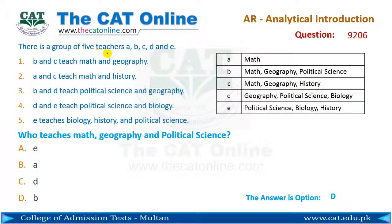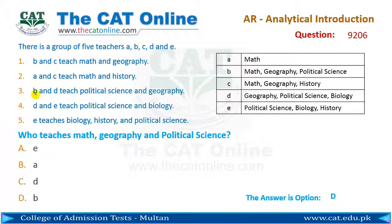There is a group of five teachers A, B, C, D, and E. Condition one: B and C teach Math and Geography. Condition two: A and C teach Math and History. Condition three: B and D teach Political Science and Geography. Condition four: D and E teach Political Science and Biology. Condition five: E teaches Biology, History, and Political Science.